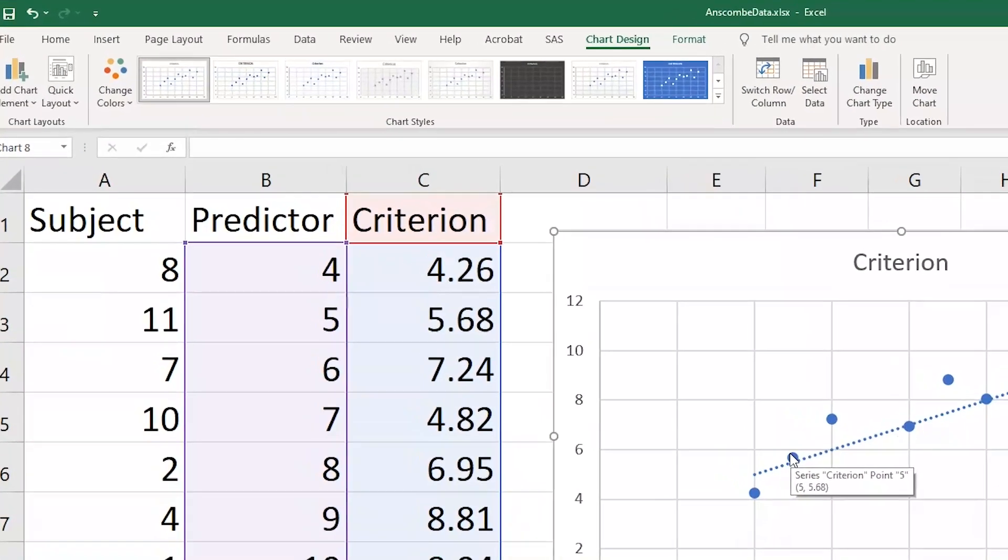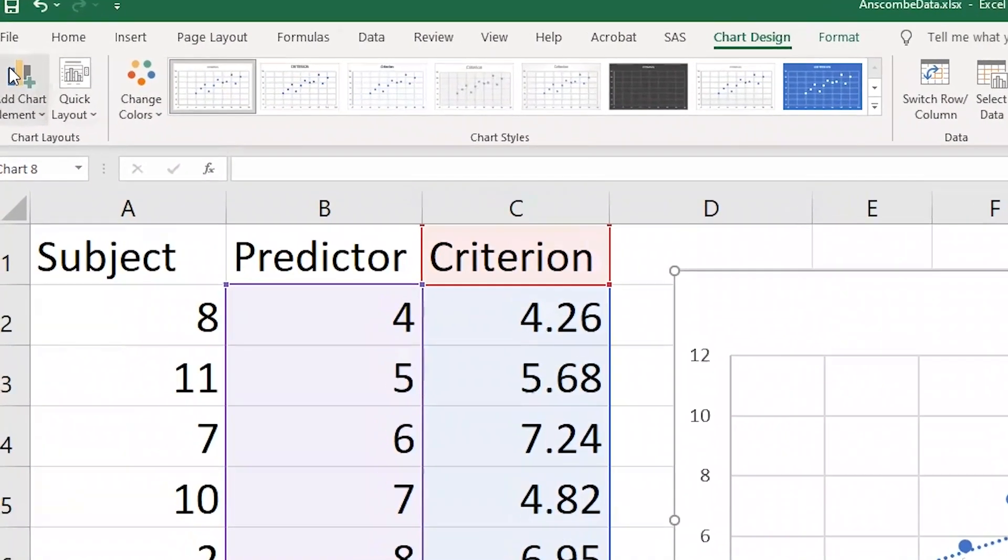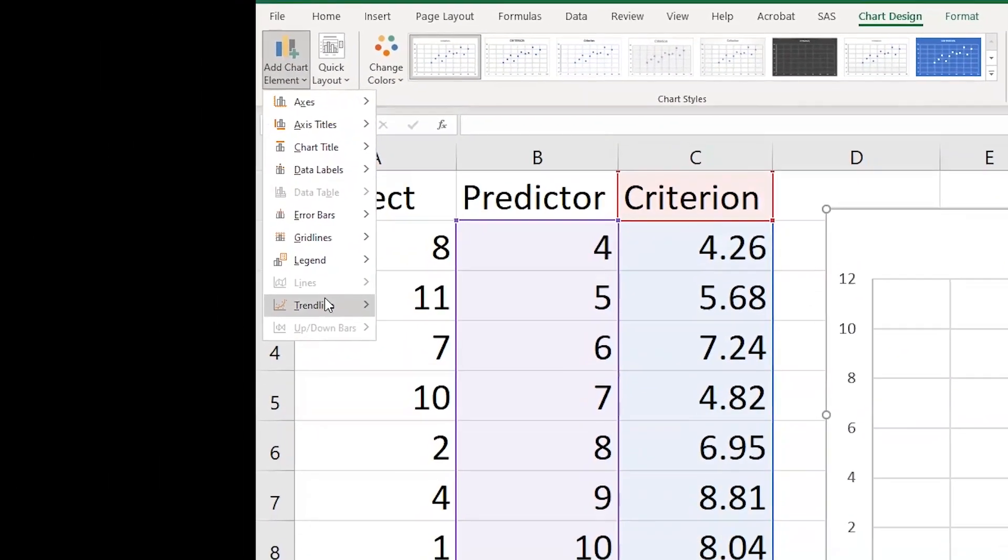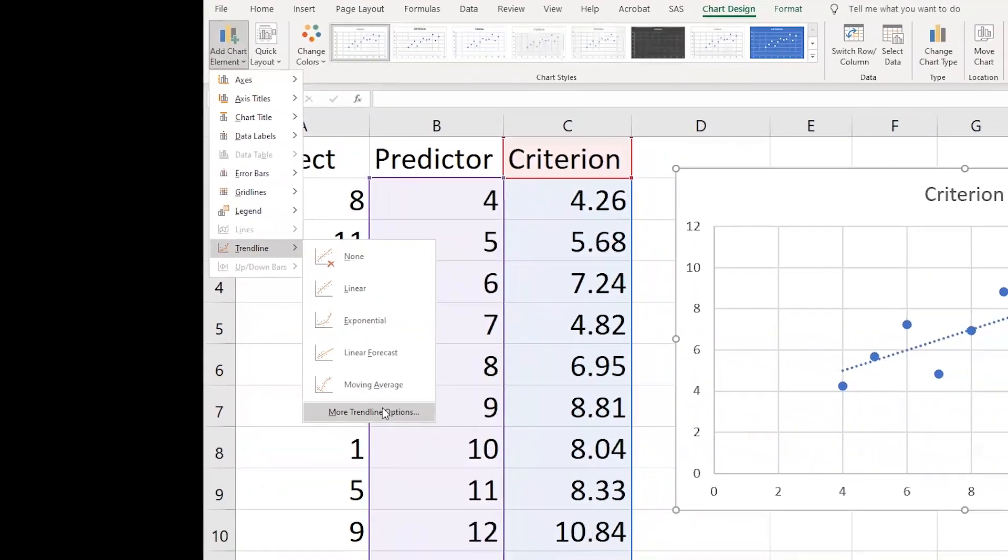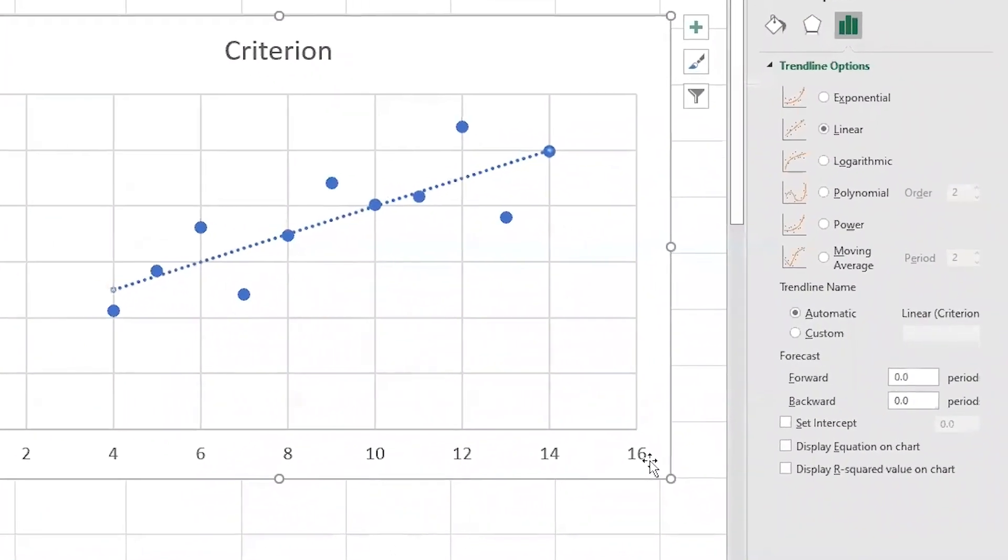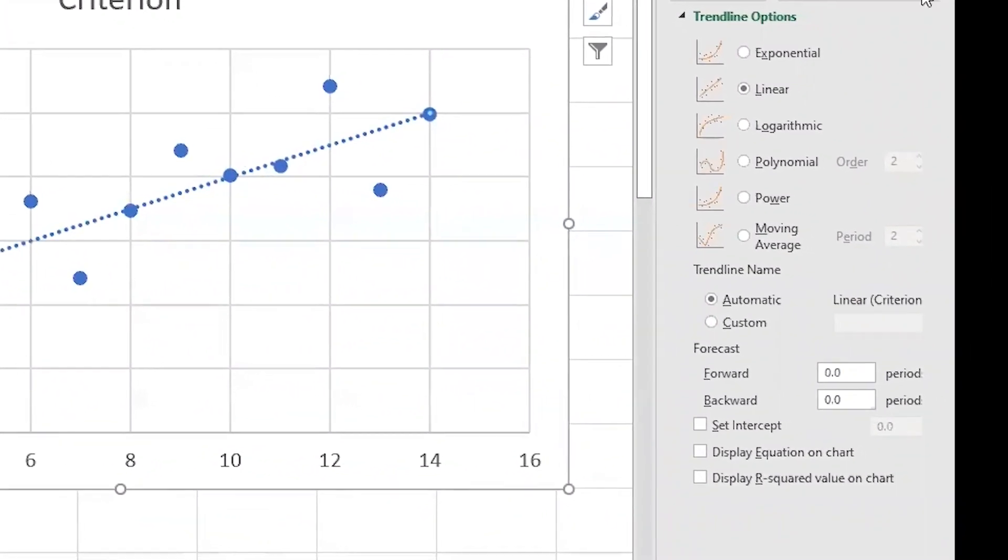And if we want to see the equation that this regression line is, we do the same thing. Come into add chart elements, come into the trend line, select more trend line options, and a little tab will appear on the right hand side for us for formatting the trend line.